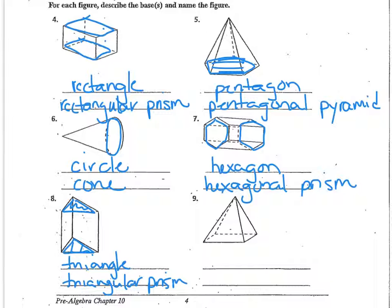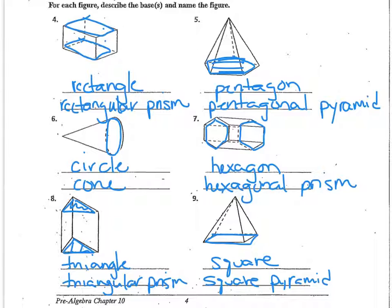And in the last one here, the shape of the base is a square. So this is a square pyramid, because the remaining faces are triangles.